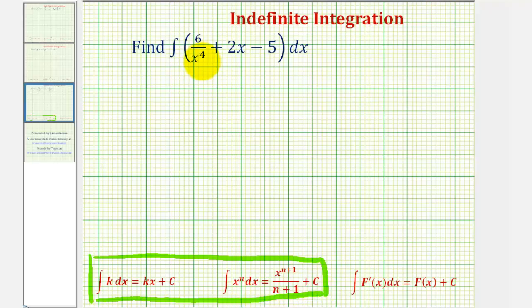Looking at this first term, we're going to rewrite this so we have six times x raised to a power. To review, remember, if we move x to the negative fourth up to the numerator, it will change the sign of the exponent. So we're going to rewrite this as the integral of six x to the negative fourth plus two x to the first minus five.